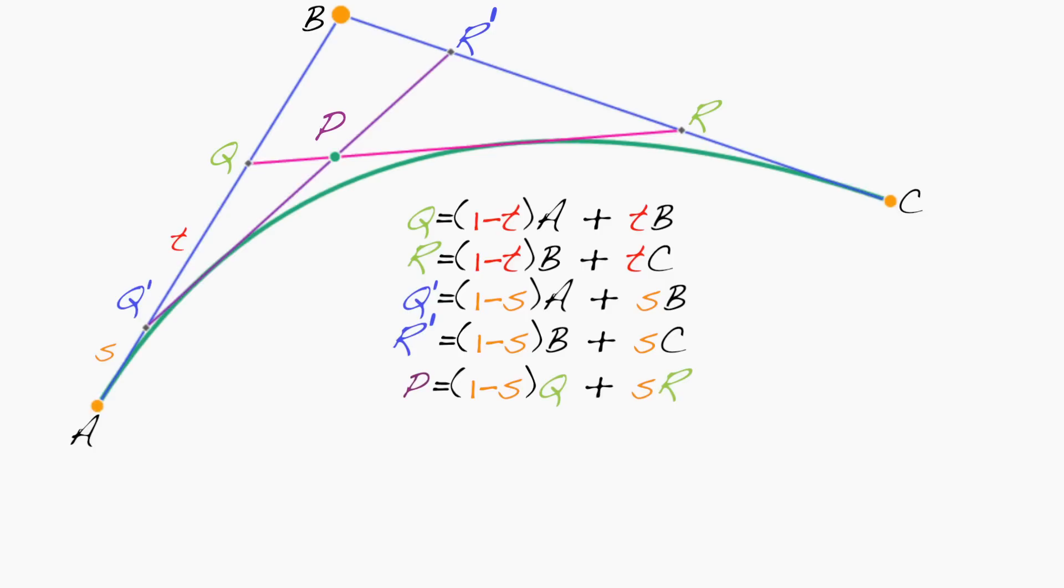Now, if that's true, something nice happens, because as s approaches t, this expression here approaches (1-t)q + tr. And that's the thing I ultimately want to prove. So the only thing left to show is that the intersection point can be written this way. Why should that be the case?